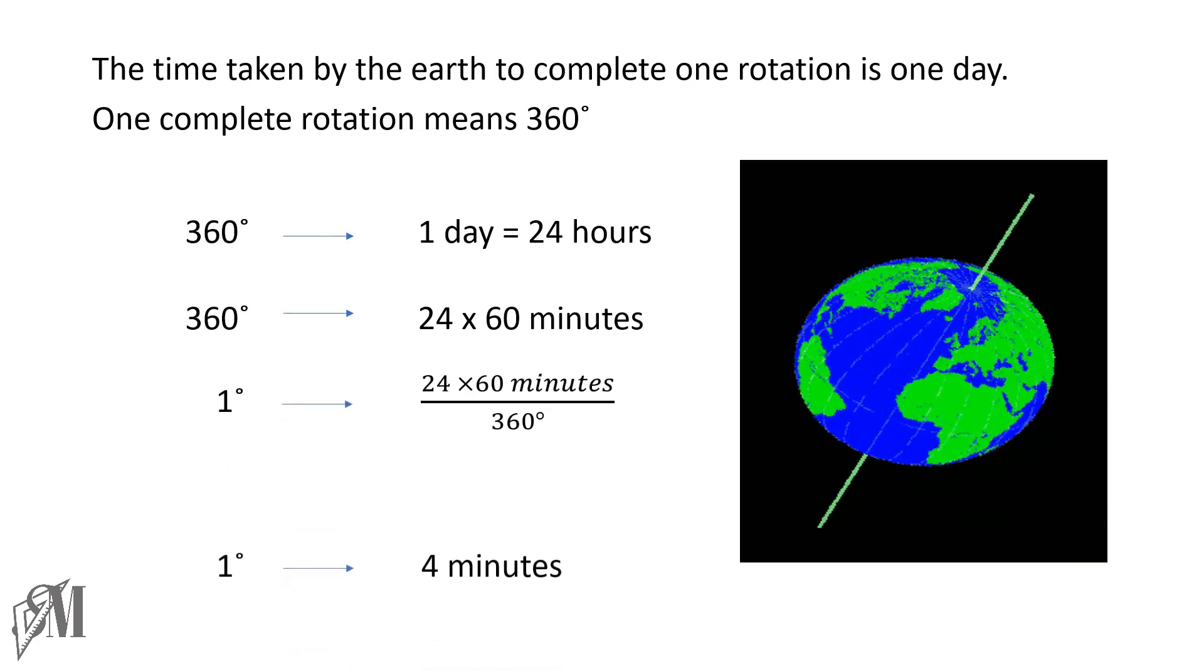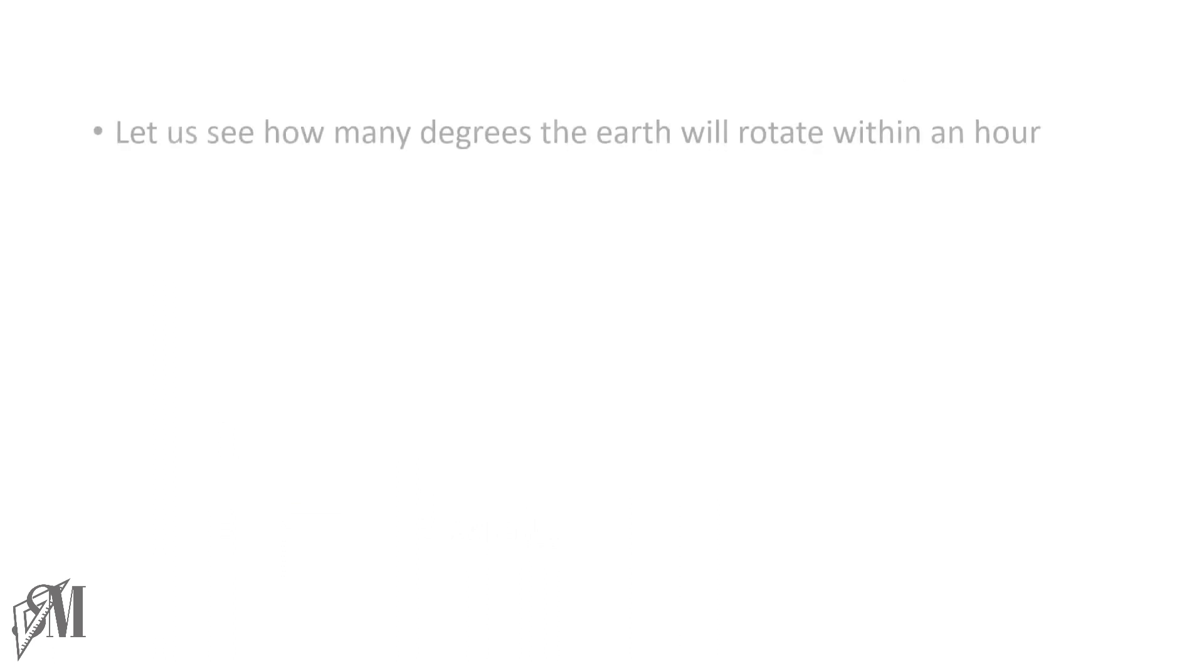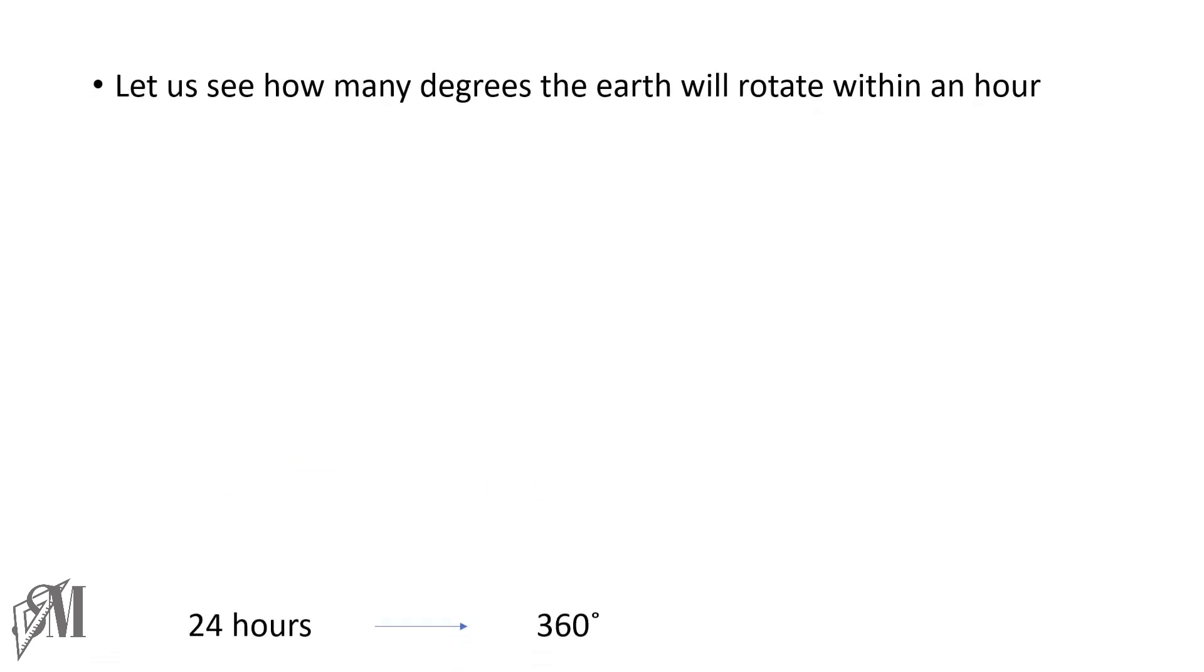And let us see how many degrees the Earth will rotate within an hour. We know within 24 hours it rotates 360 degrees. That says within one hour it rotates 15 degrees.